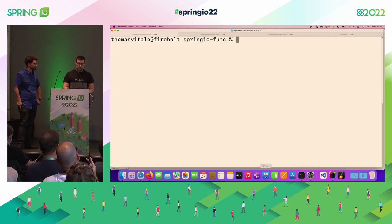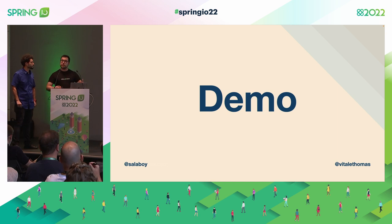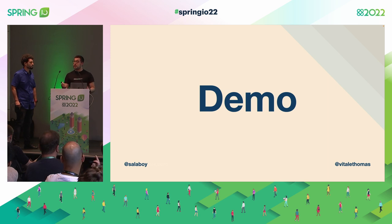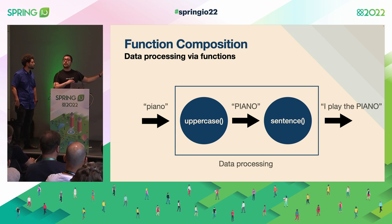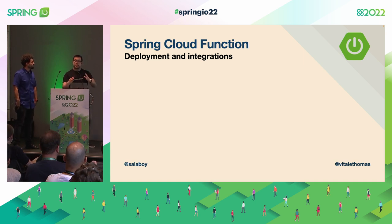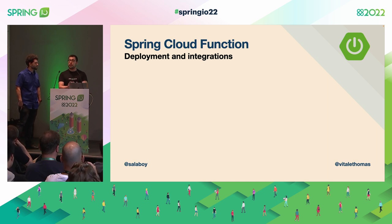I use HTTPie — I send the request to the localhost 8080 root endpoint where my function is exposed by the framework, specifying the name of a musical instrument — piano. And I get the response back: "I play the piano". This is very interesting because I really focused on the business logic and the framework took care of type conversion, function composition, mixing imperative and reactive, and exposing the function via HTTP.